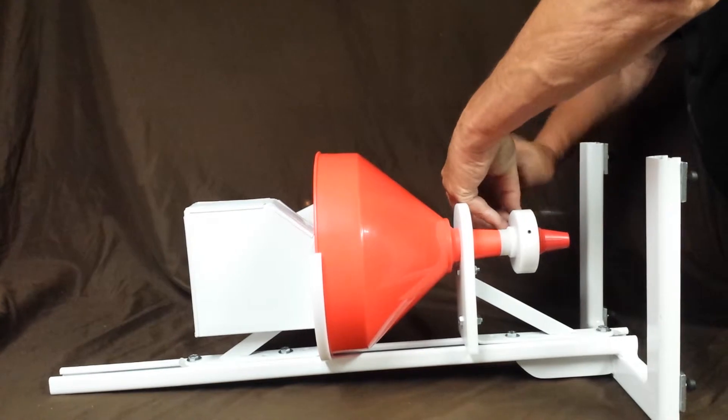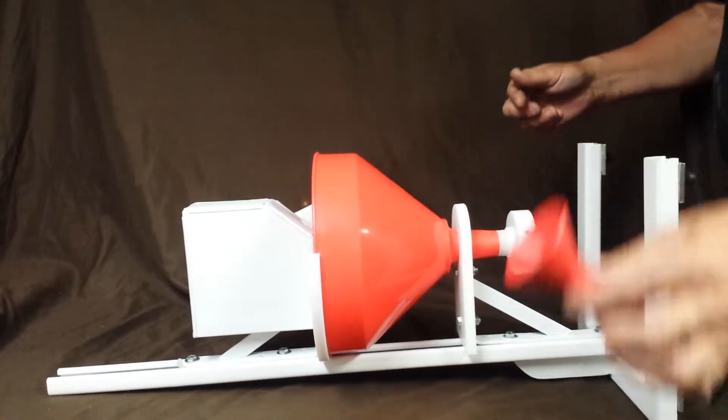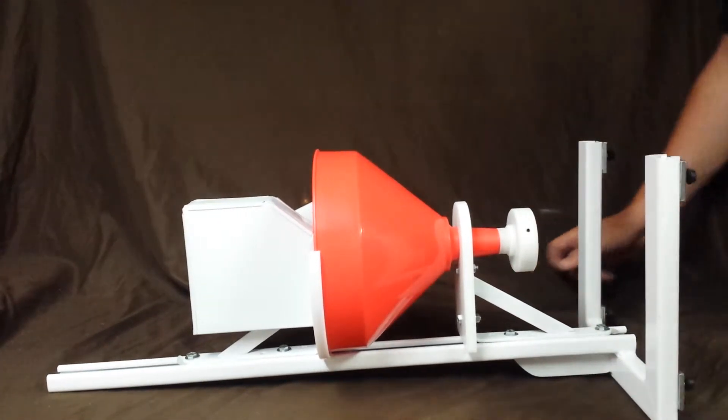You loosen these set screws out so that you can remove this funnel. You remove this funnel from the bottom, set it down, you will need that again.